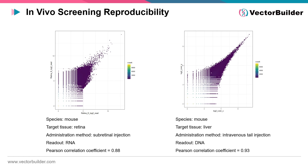VectorBuilder can conduct in vitro and in vivo screening for your library in a variety of systems. Shown here are results from two such screens: the first experiment explored novel random peptide display variants injected into mouse eyes, and in the next experiment, a different library was introduced via tail vein injection. Both methods demonstrated high reproducibility between biological replicates.